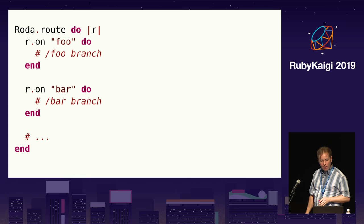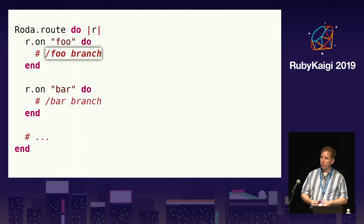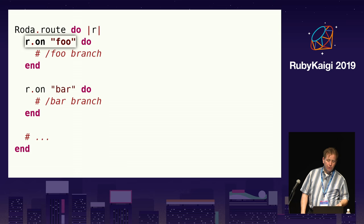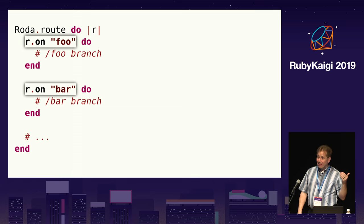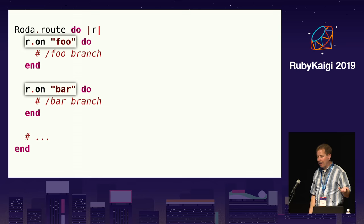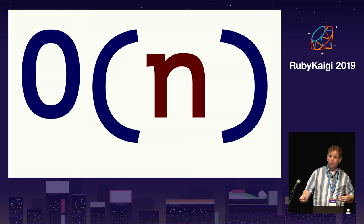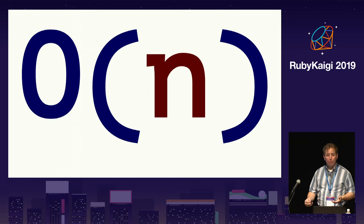A brief example: after Roda yields control to the route block, the r.on method is called with the string 'foo', which checks if the first segment in the request path is 'foo'. If so, the block yields and only routes inside that block are now considered. If the first segment is not 'foo', r.on returns without yielding to the block. In Roda, there is a linear search for the initial segments of the tree. For most routing trees it's not a major issue, but if you have a completely flat URL structure where all initial path segments are distinct, Roda's routing tree would devolve back to linear search behavior similar to Sinatra. For that reason and for general code organization, Roda has offered a multi-route plugin since the initial release.